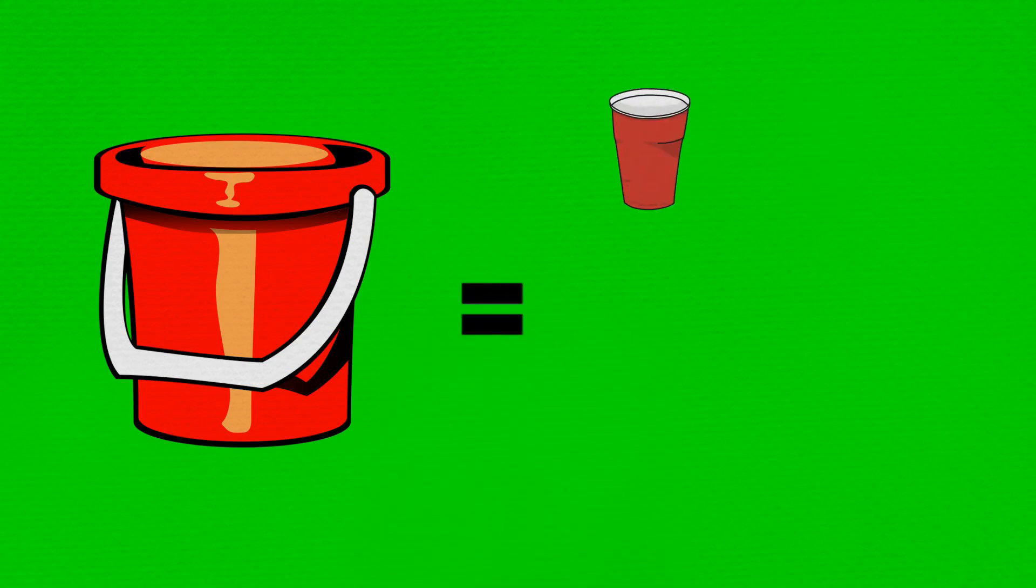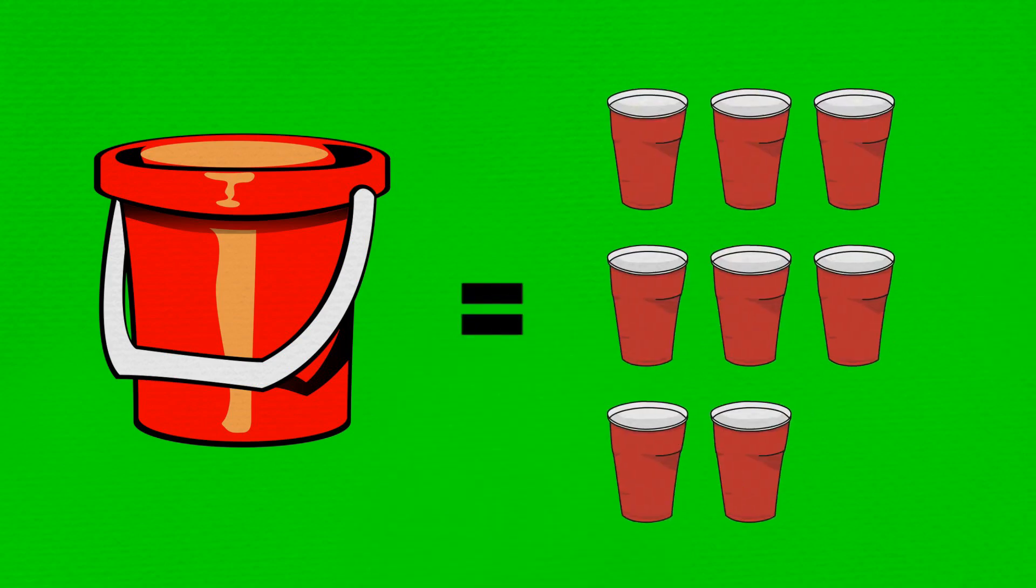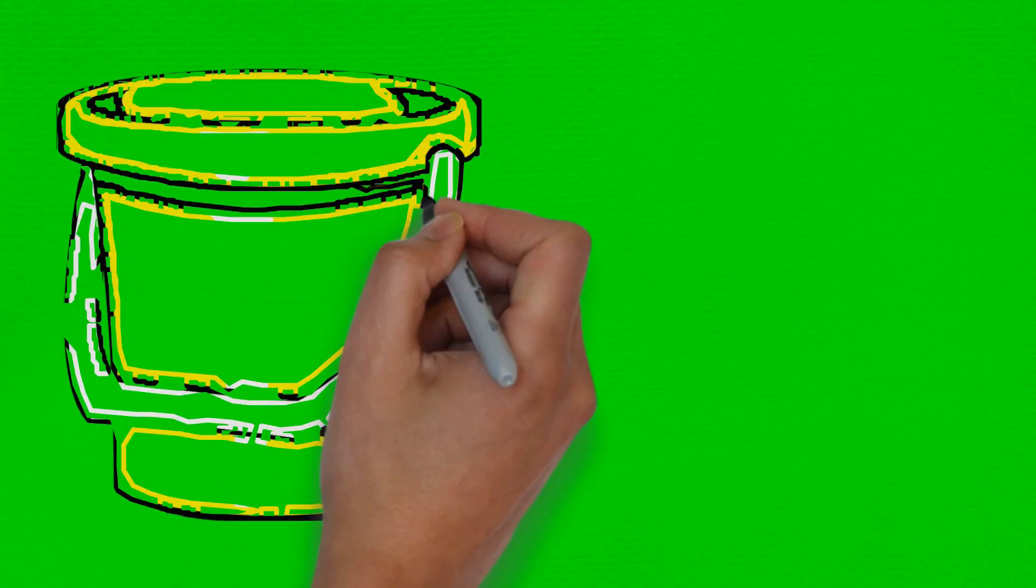The twins told their dad that it took nine lots of coffee cup sand to fill the small bucket. So, the volume of the small bucket was nine times the volume of the cup,